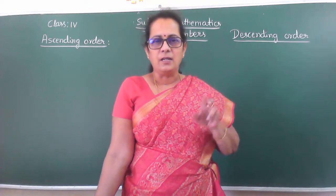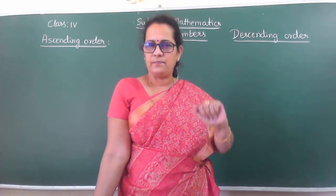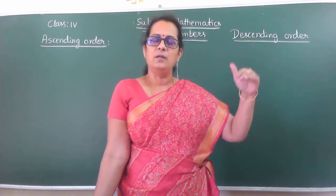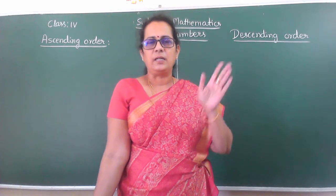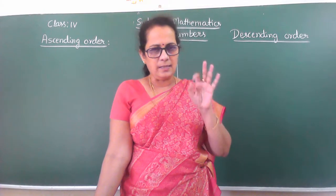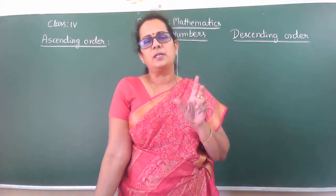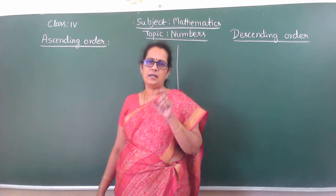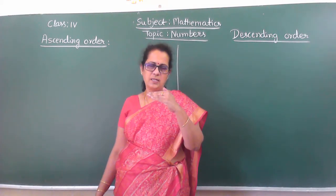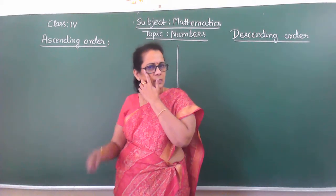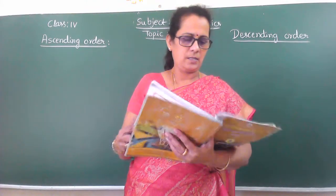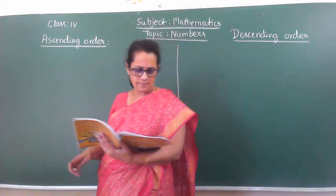So, if they give the 4-digit numbers, then you have to identify the smallest, write that first, and write the other numbers next to that in order. We call this ascending order. So, let us do the first example sum.